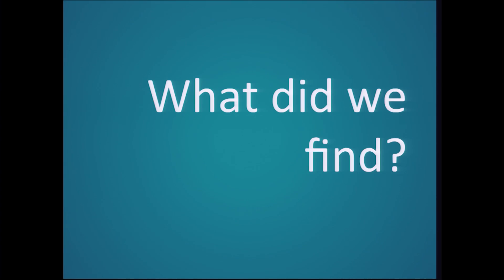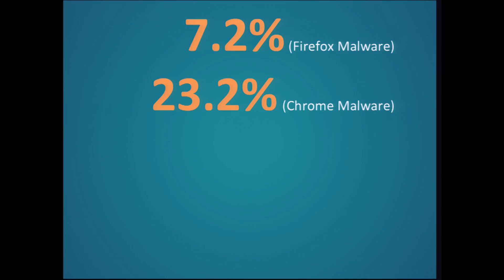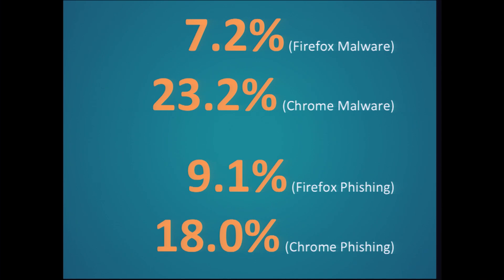So what did we find? I'll talk about two things: the results we found for malware and phishing warnings, and the results we found for SSL warnings. First, the malware and phishing warnings. This is the click-through rate for Firefox and Chrome malware warnings, and this is the click-through rate for Firefox and Chrome phishing warnings.